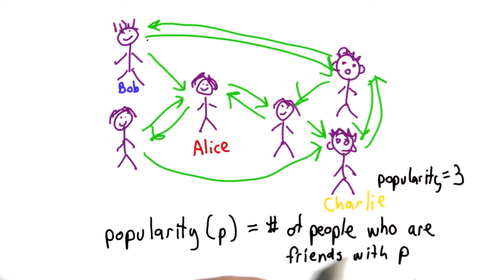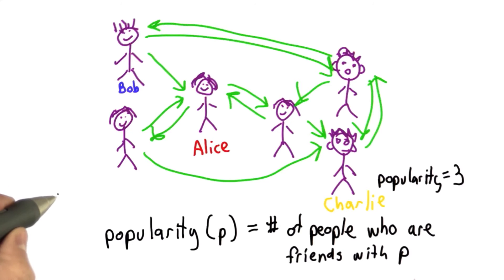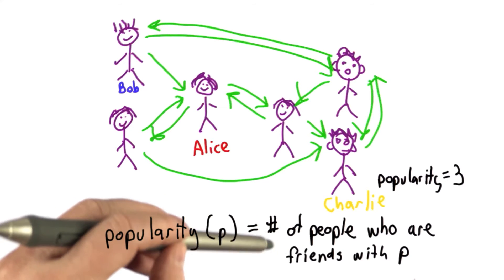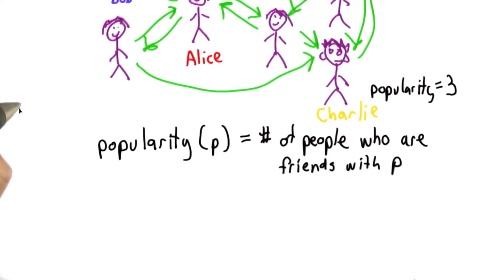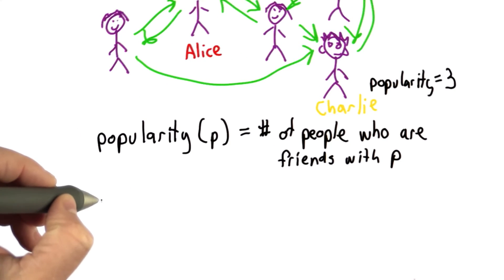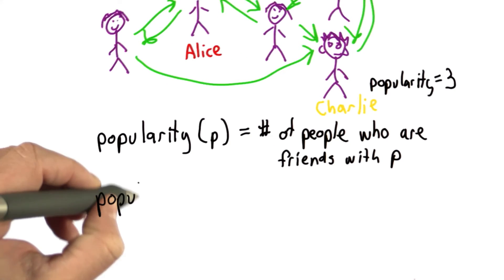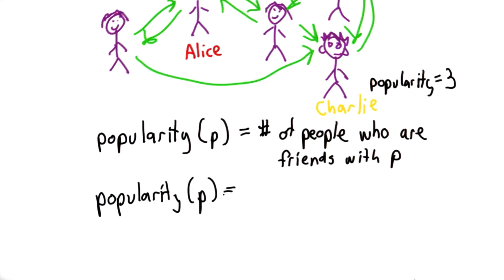So the definition of popularity doesn't just depend on the number of friends you have. It depends on both the number and the popularity of your friends. So we can change the definition. Let's instead define the popularity score of a person P. Now it's going to be the sum of the popularities of all of their friends.